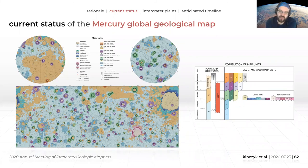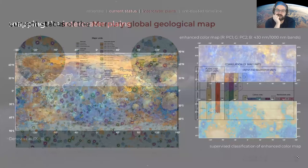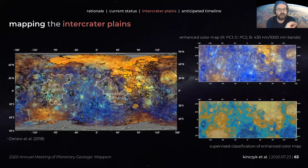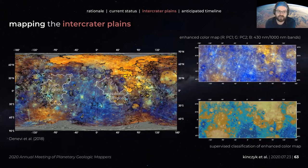However, there is value in talking about what's happening in the intercrater plains. With the enhanced color maps and supervised classifications of those maps that Mallory, Deborah, and Brett have been working on, they're trying to identify specific targeted places in the intercrater plains — not all of them together, but specific places where we might be able to systematically identify subunits on the basis of things like color. That work is ongoing; we're not finished yet, but the goal is to wrap it up relatively soon so we can say something about the geology of the intercrater plains rather than having it as one massive unit.